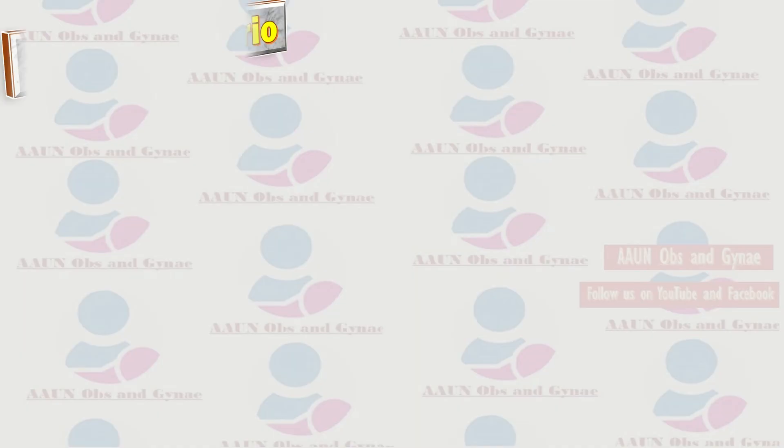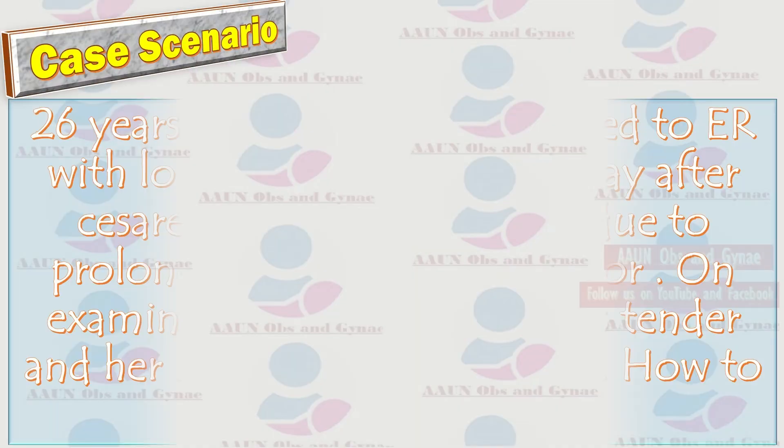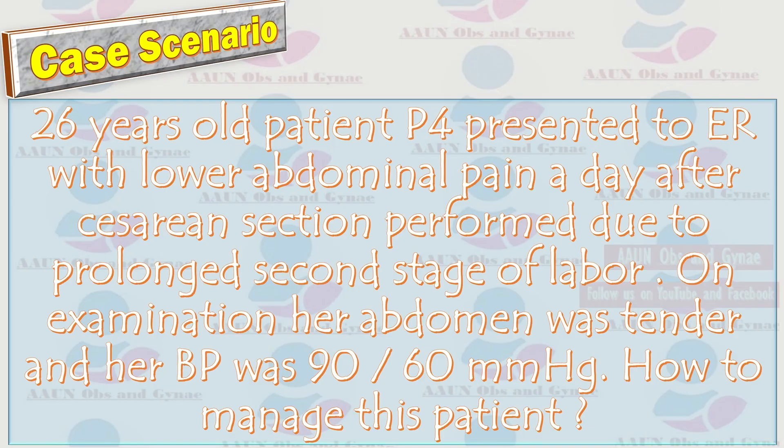Let us explain broad ligament hematoma and its management by discussing a case scenario. A 26-year-old patient, para 4, presented to the ER with lower abdominal pain a day after cesarean section performed due to prolonged second stage of labor. On examination her abdomen was tender and her blood pressure was 90/60 mmHg.